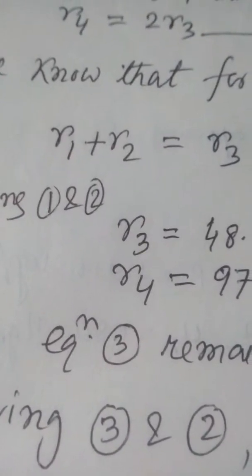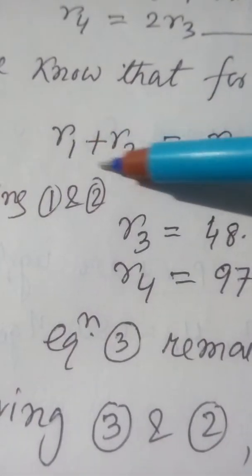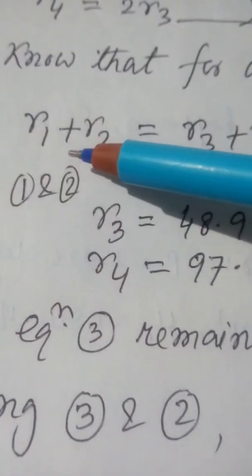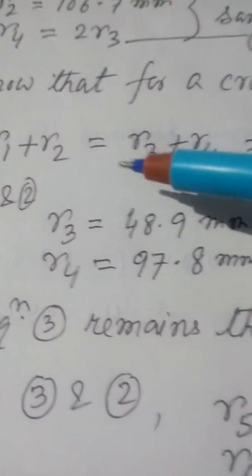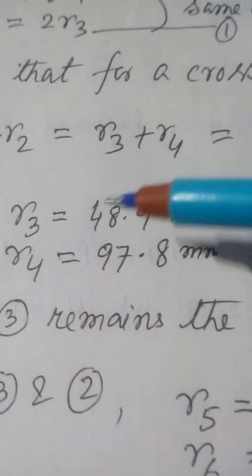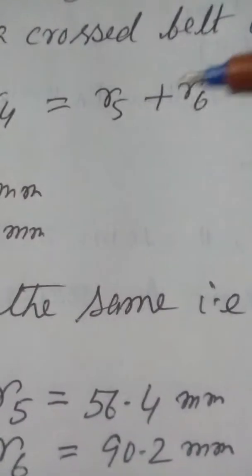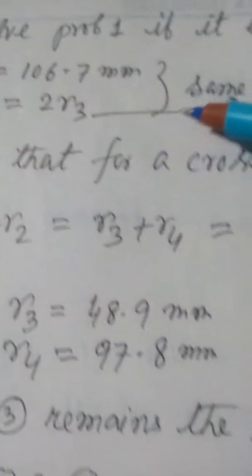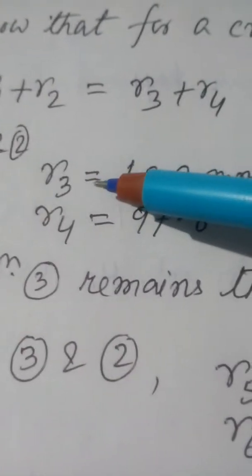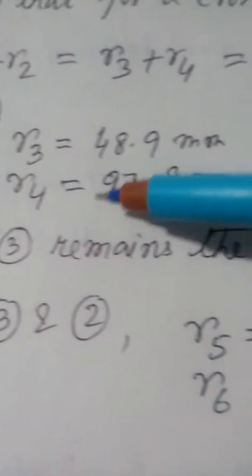This relationship comes from the cross belt length formula where alpha = (R1 + R2)/L, and since L is the same center distance for all pairs, it cancels — leaving the sum of radii constant across all pulley pairs. Using this as Equation 2 along with the speed ratio as Equation 1, you can solve easily for R3 and R4.